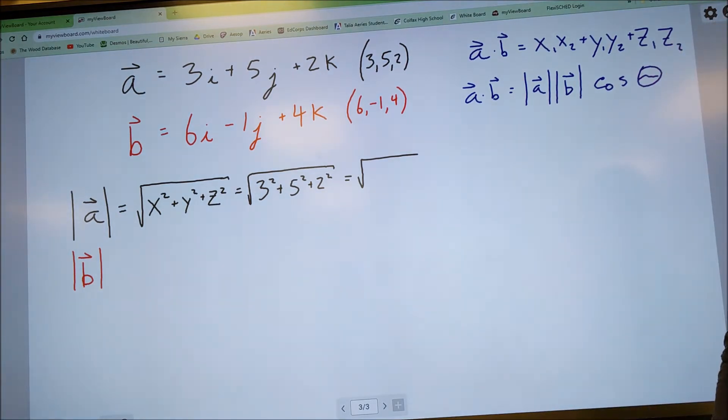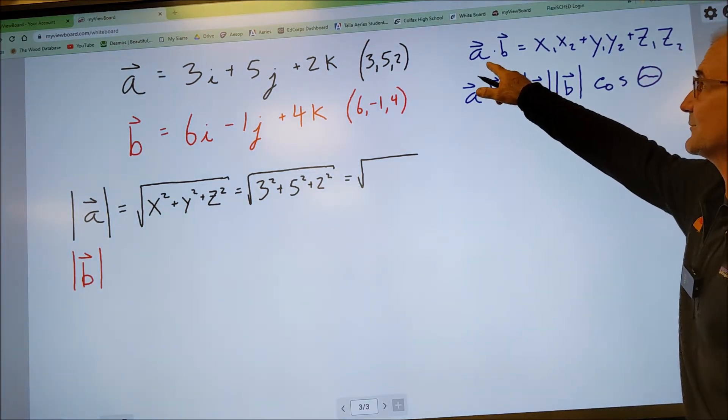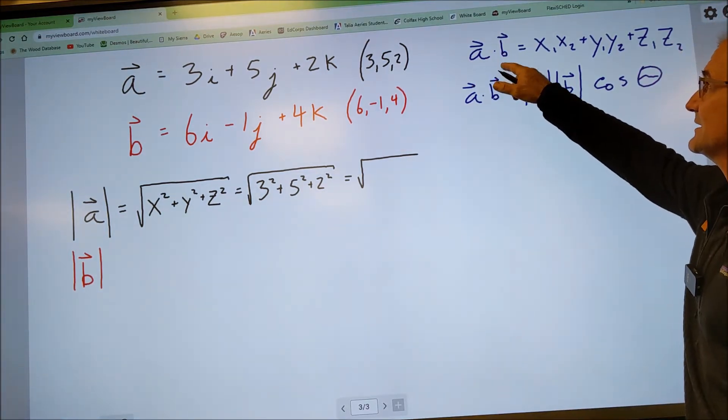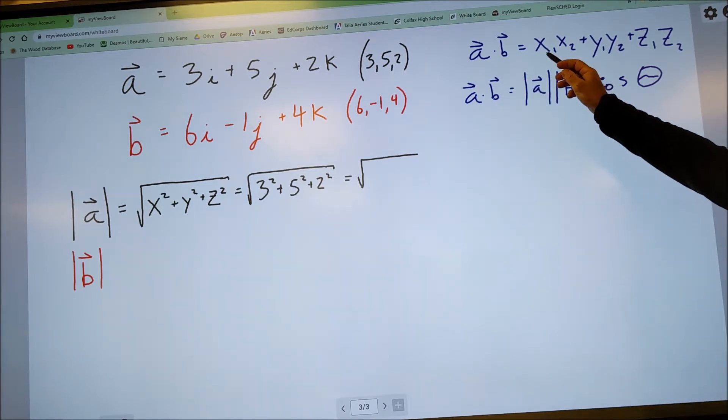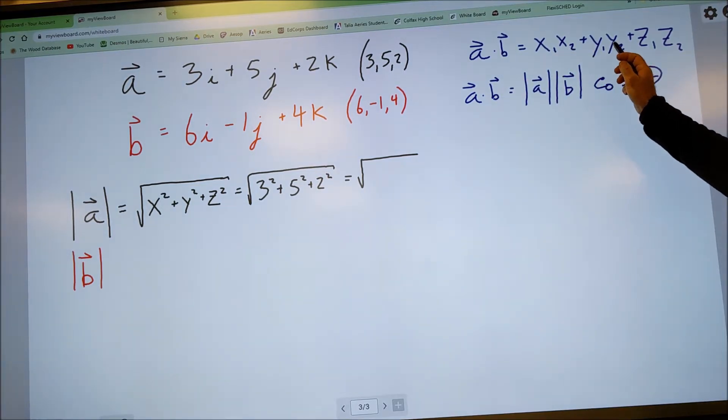There are two equations for dot product. The first equation for dot product, and it's written A dot B, is the X values multiplied together, plus the Y values multiplied together, plus the Z values multiplied together.